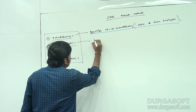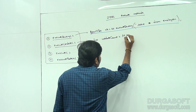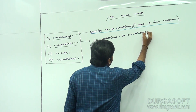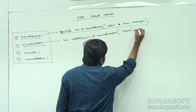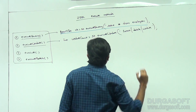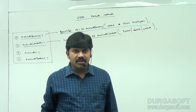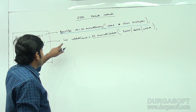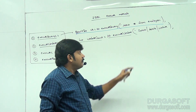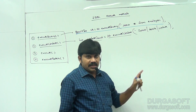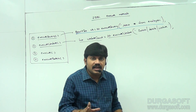The syntax is: int updateCount = st.executeUpdate(query), where you can pass either an INSERT query, DELETE query, or UPDATE query. For non-SELECT operations, we can happily use the executeUpdate method. The return type of executeUpdate is an int value representing the number of rows affected — rows created, deleted, or updated.